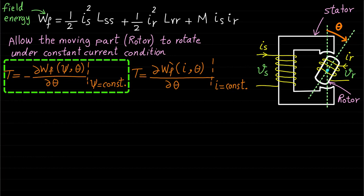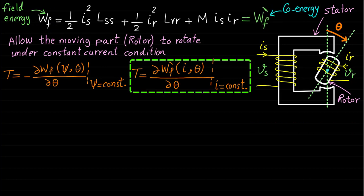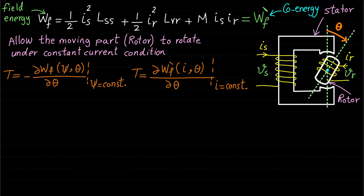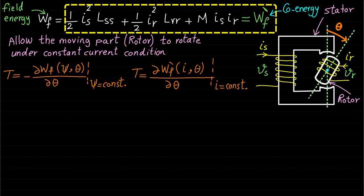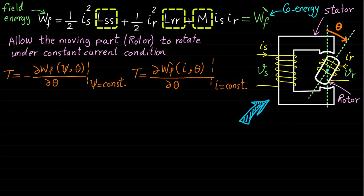As we know from previous lectures, if the magnetic system is assumed to be a linear magnetic system, the field energy WF will be equal to the co-energy WF dash. Therefore, the co-energy torque expression will be used because it is easier — this expression is already a function of currents, and we are going to take the derivative with respect to rotor position under constant current condition. Note that since we allowed the rotating part to rotate, all the inductances are now changing with respect to rotor position.